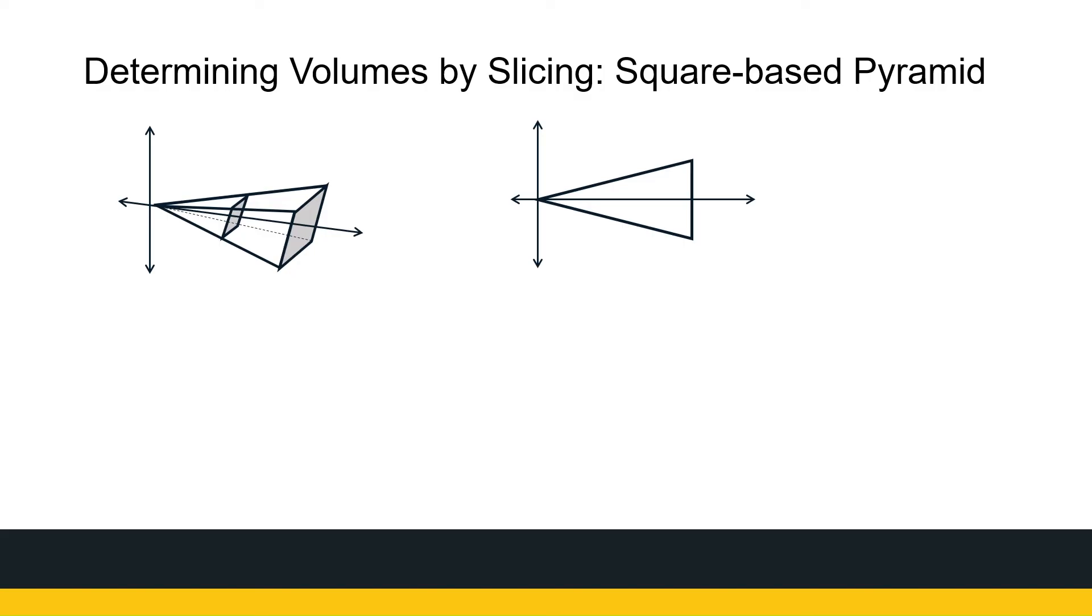Alright, now we had the formula for it. It was a third times the base times the... So let's write the formula here so that we know what we're aiming for. A third, a²h, where h is the perpendicular height and a is the side lengths.